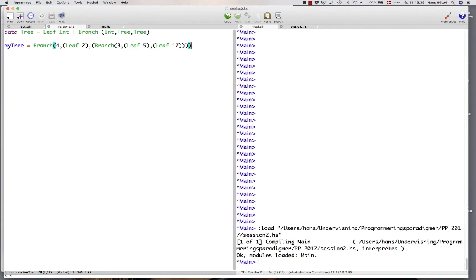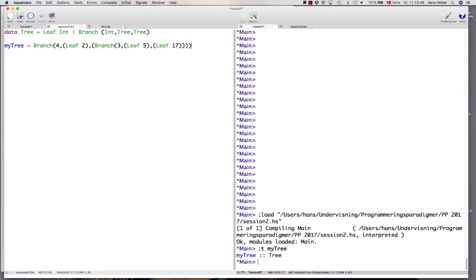Let's send this to Haskell. What is the type of my tree? Well, it's a tree. Now, isn't that nice?